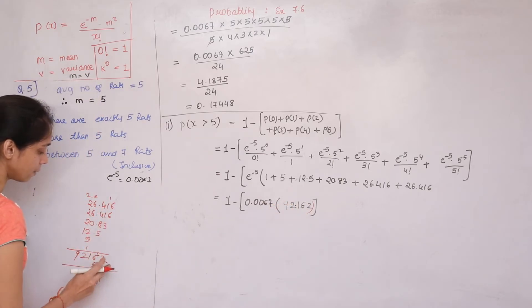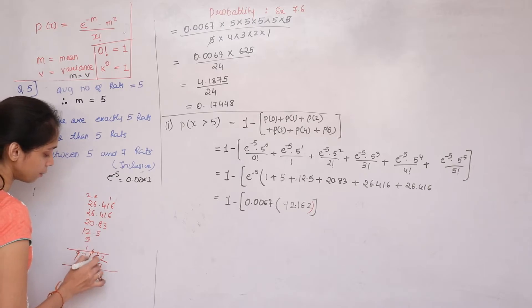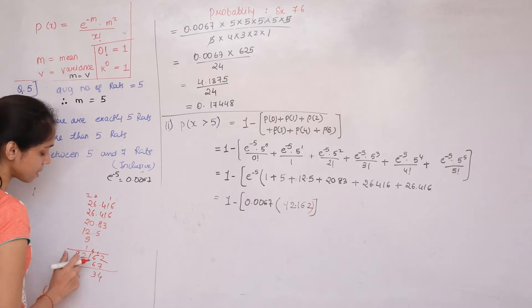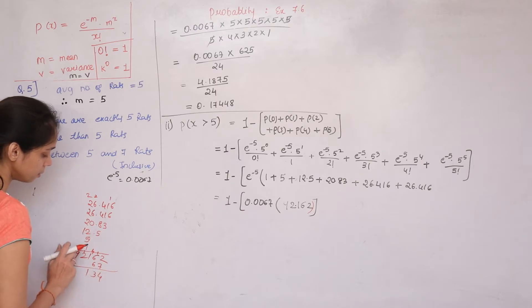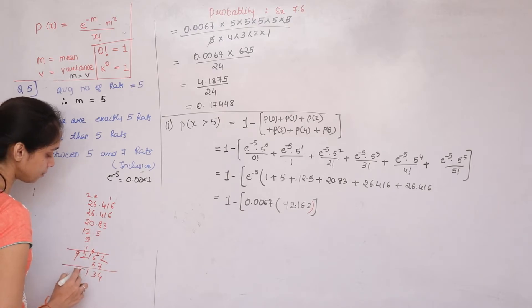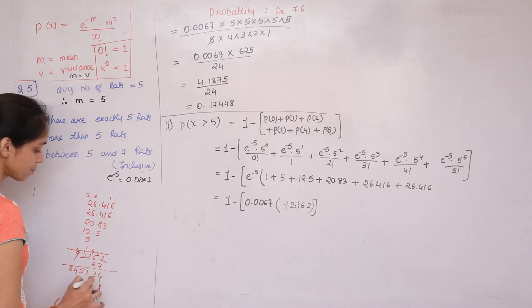Performing the subtraction: 1.0000 − 0.6175. Step by step: 10−5=5; 9−7=2; 9−1=8; 9−6=3. This gives 0.3825 as the final answer for P(X > 5).